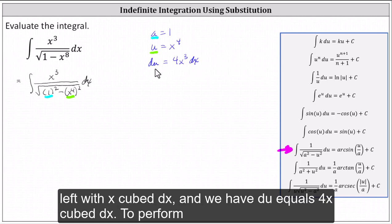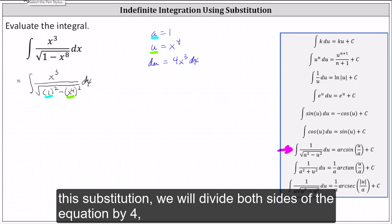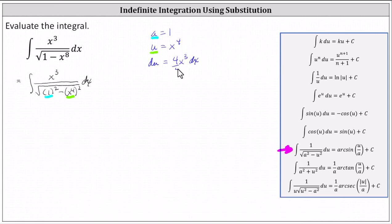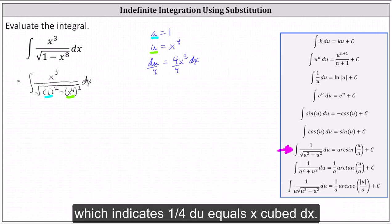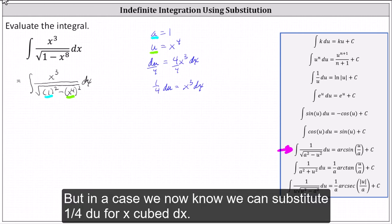To perform this substitution, we will divide both sides of the equation by four, which indicates one-fourth du equals x cubed dx, which indicates we now know we can substitute one-fourth du for x cubed dx.